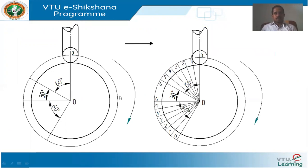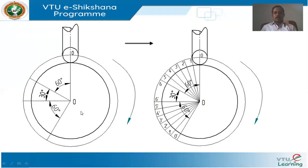Consider the cam rotating in clockwise sense. Join O and zero with a thin straight line. With reference to O-zero, mark in counterclockwise sense: outstroke angle 60°, first dwell 30°, return stroke 60°, and remaining 210° for the second dwell — all paths taken up to the prime circle using a protractor centered at O.